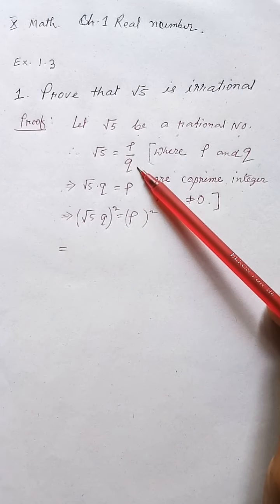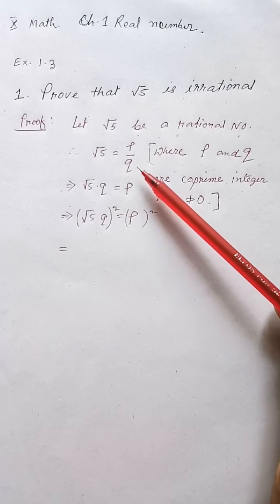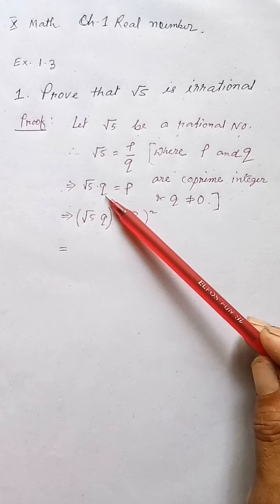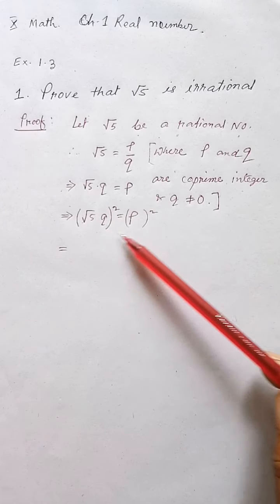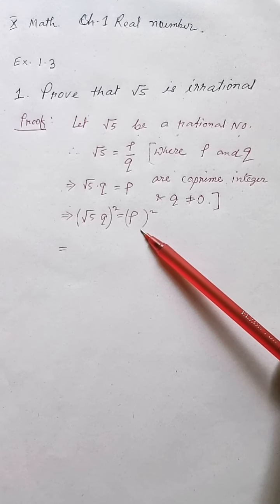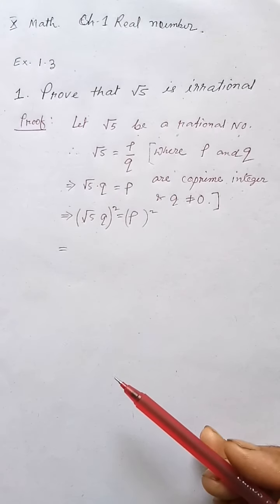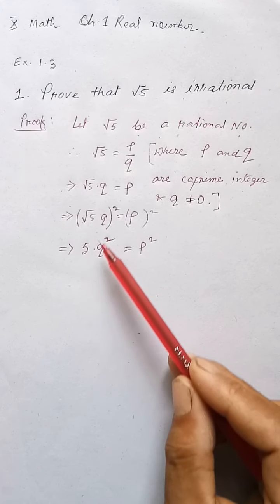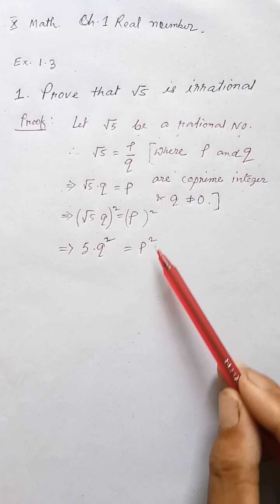If root 5 is rational, then it is in the form of P by Q, that is root 5 equals P by Q. By cross multiplying we get root 5 × Q = P. Now we can square both sides — this is a correct step. After squaring both sides we get 5Q² = P².